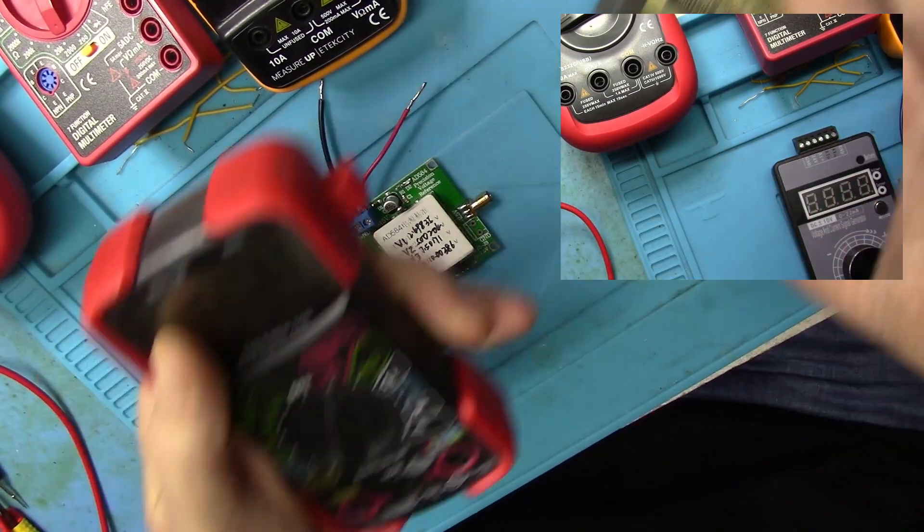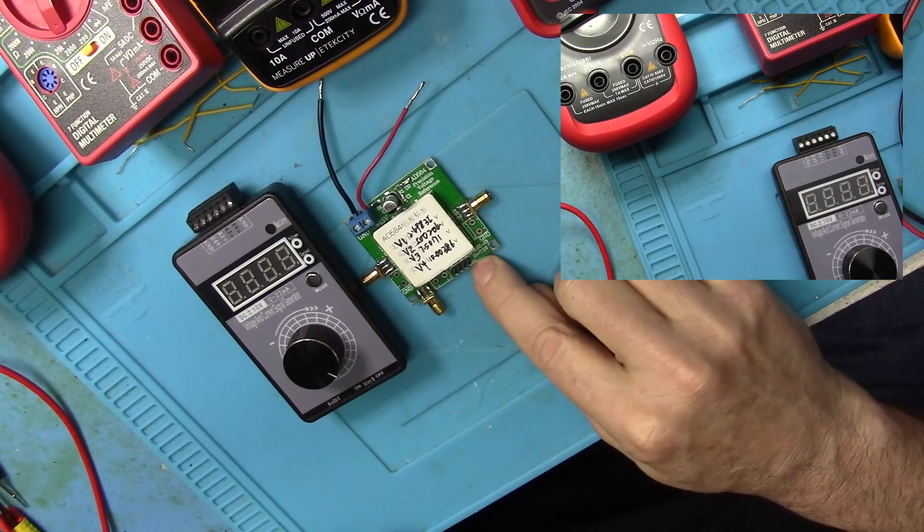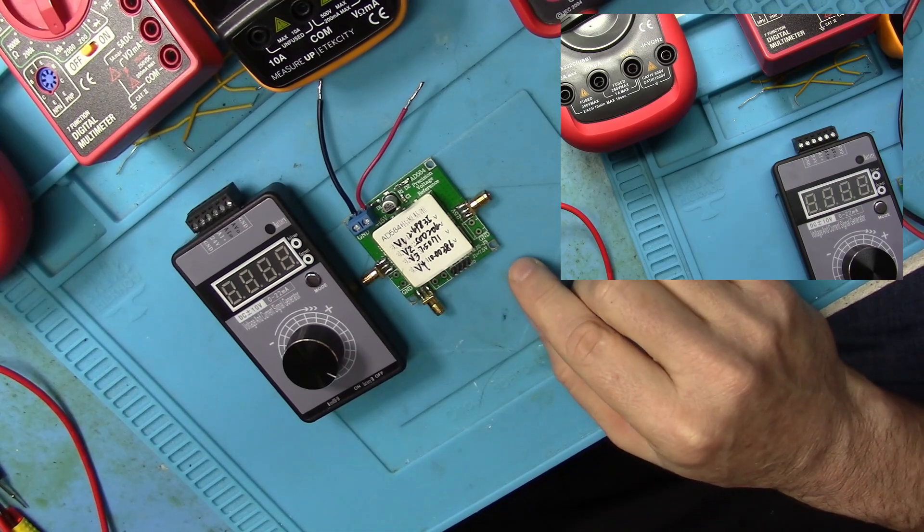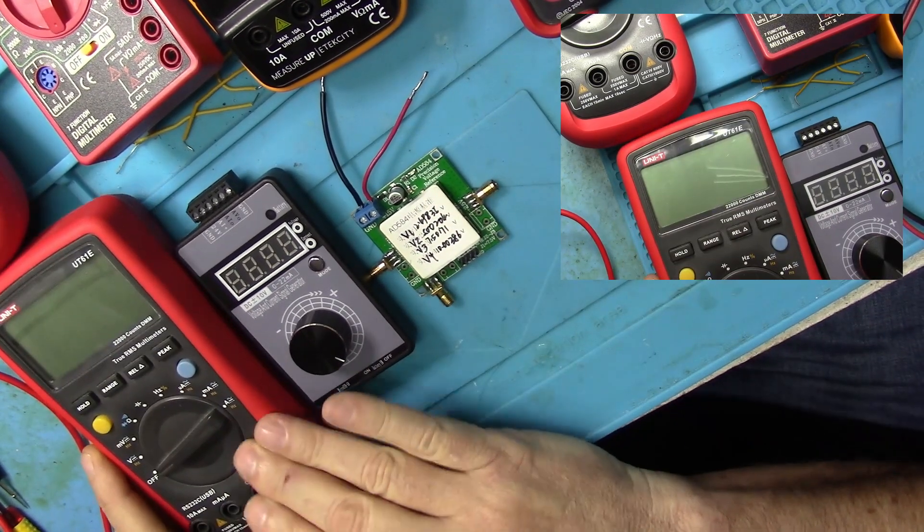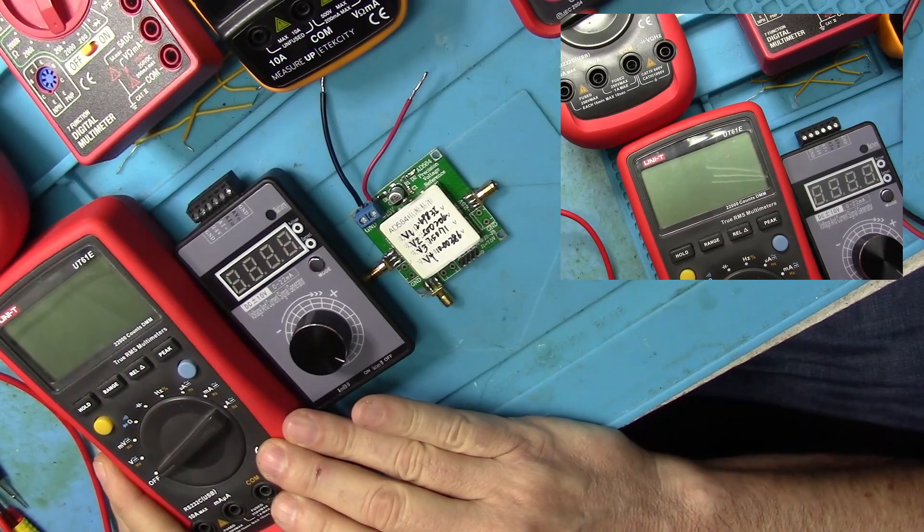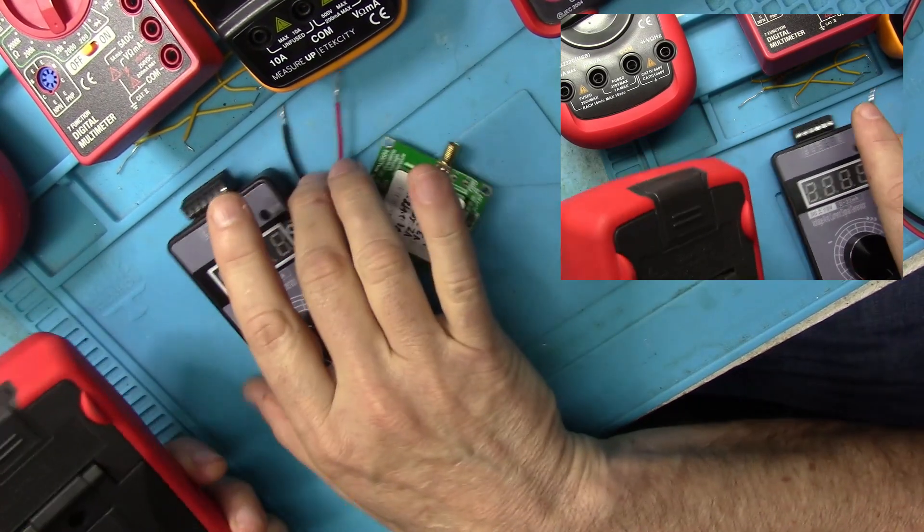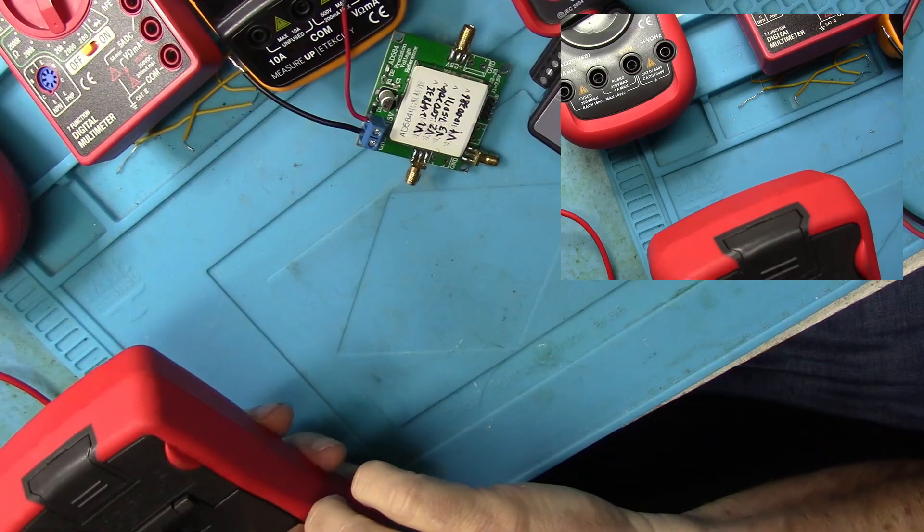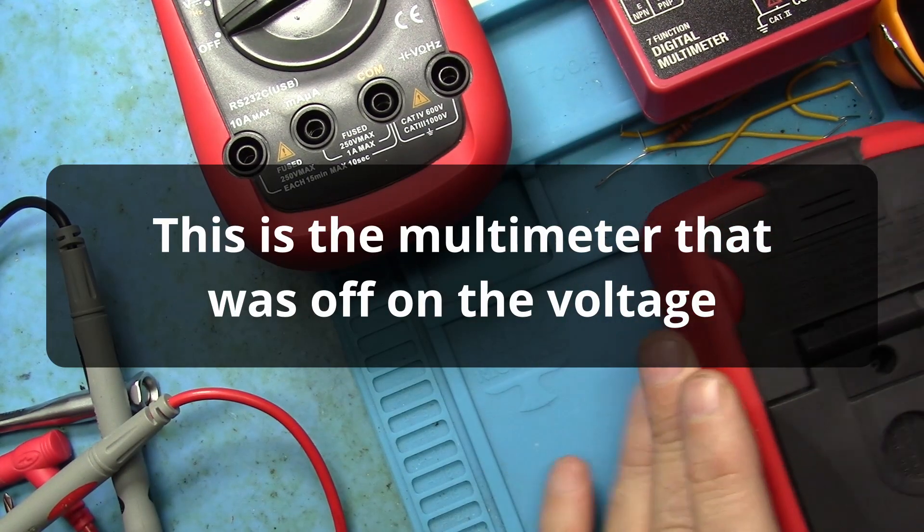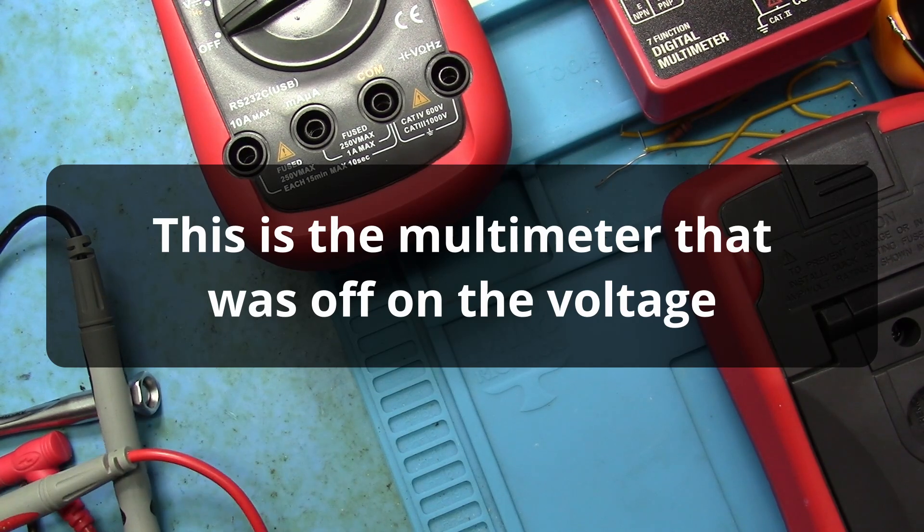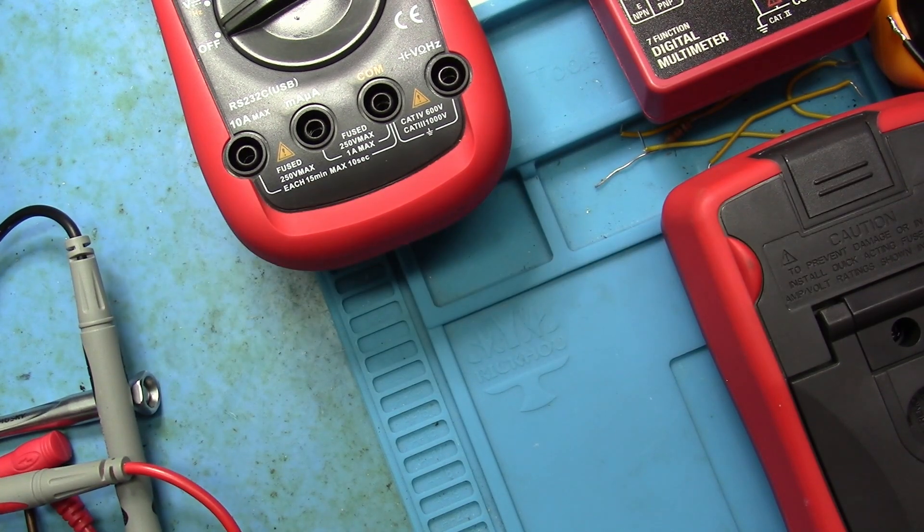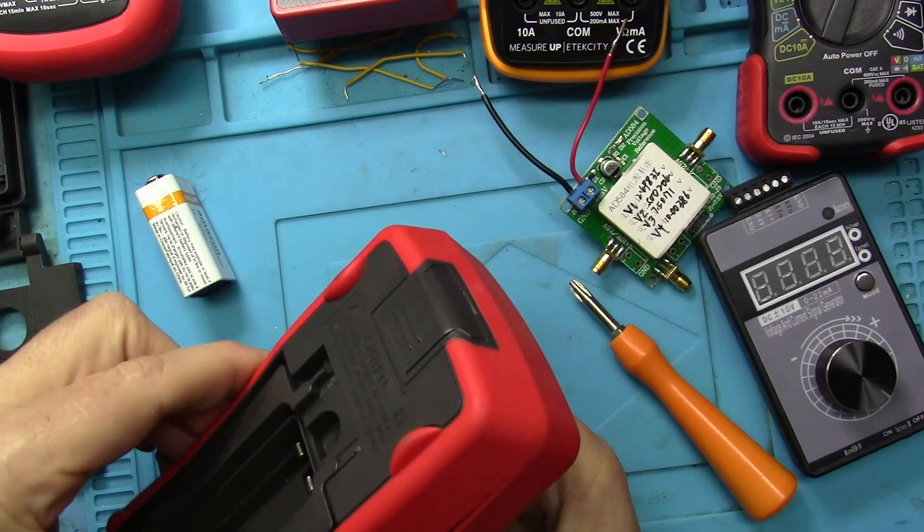Now let's go ahead and turn this off. And let's go back to our reference source, which we know is 5 volts. And what we can do is fix this multimeter. And the way we're going to do that is I'm going to open up the back.